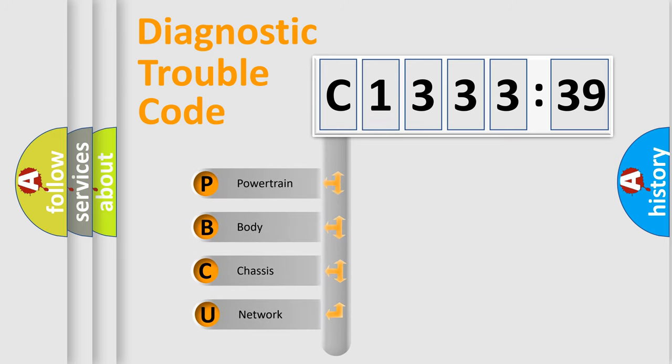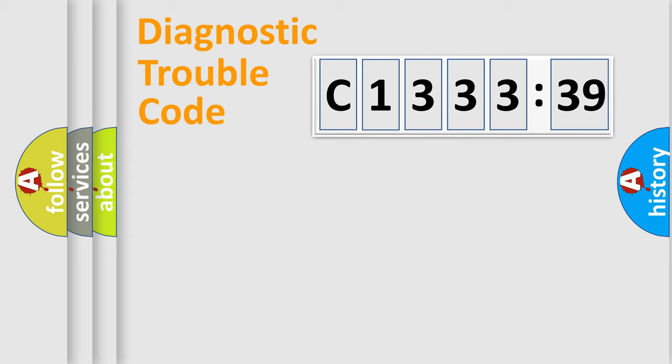First, let's look at the history of diagnostic fault code composition according to the OBD2 protocol, which is unified for all automakers since 2000. We divide the electric system of the automobile into four basic units.